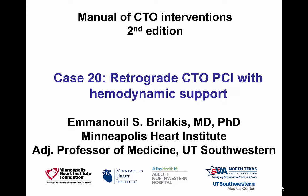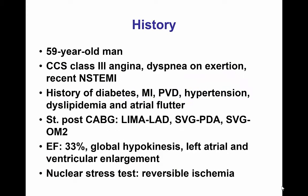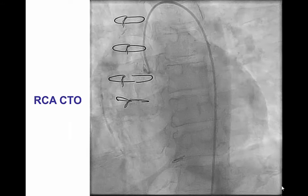Hi, this is Manos Brilakis from the Minneapolis Heart Institute, presenting case 20 for the second edition of the Manual of CTO Interventions. This is a case of retrograde CTO-PCI done using hemodynamic support. The patient presented with angina and was found to have an osteo-RCA CTO with an occluded saphenous vein graft to the posterior descending artery. He also had ischemic cardiomyopathy with an ejection fraction of 33%, and had recently undergone a non-ST elevation myocardial infarction.